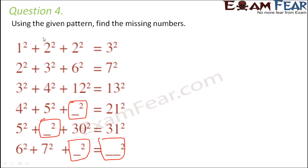The first observation is that the second term is one more than the first term. If the number in the first term is one, the second term is two; if the first term is two, the second term is three; if the first term is three, the second term is four.